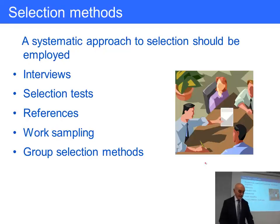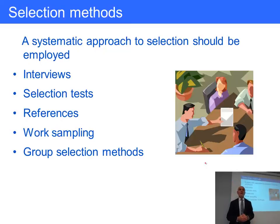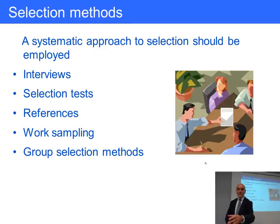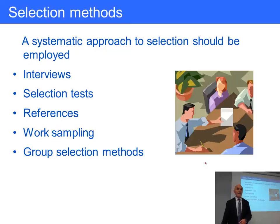Group selection methods are the Rolls-Royce of selection. Typically this involves taking a group of candidates away for around two days, usually with overnight accommodation. You give them role plays, a large pile of reports and data to prioritise, ask them to write reports, chair meetings in turn, and solve problems — to see how well they communicate with others in the group. All the time they are being watched and judged by recruitment experts.